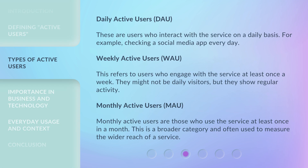Daily Active Users (DAU): these are users who interact with the service on a daily basis — for example, checking a social media app every day. Weekly Active Users (WAU): this refers to users who engage with the service at least once a week. They might not be daily visitors, but they show regular activity.